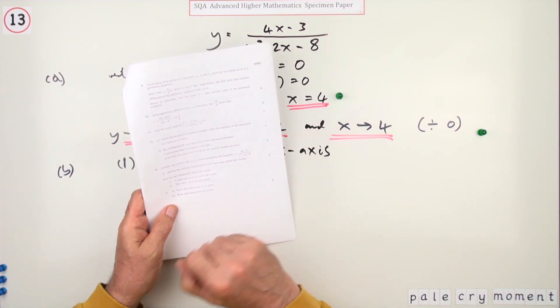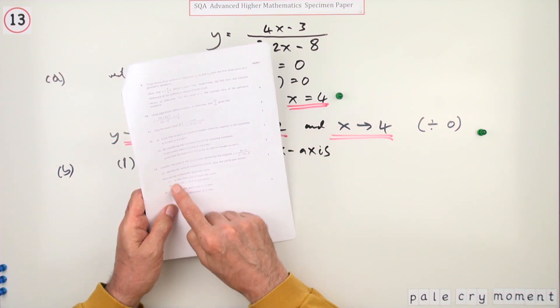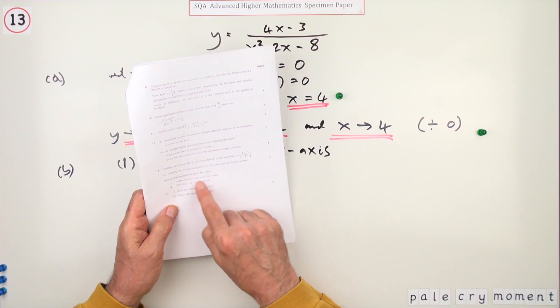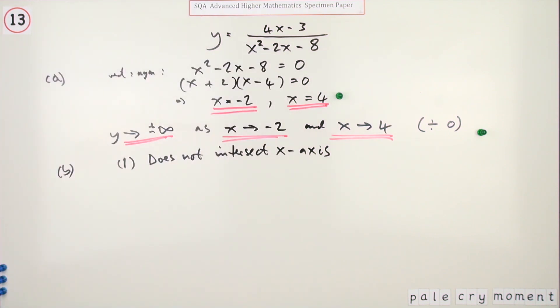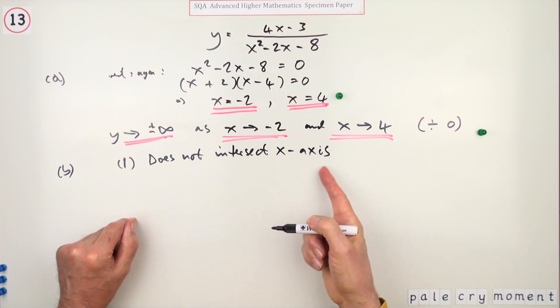Now part B, for three marks. There are two statements. First one: it does not cross or touch the x-axis. It's the same as saying it does not intersect the x-axis. And the second one: the line y equals zero is an asymptote. Well, true or false? Well, the first one you can check that quite quickly.